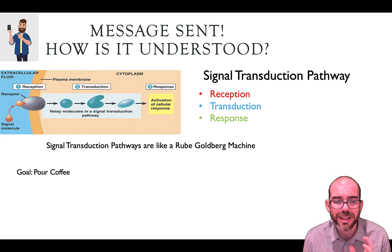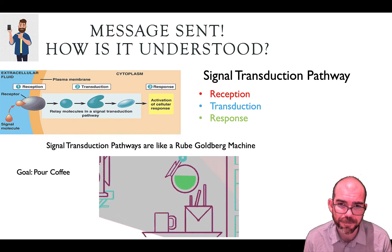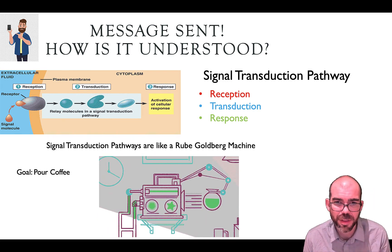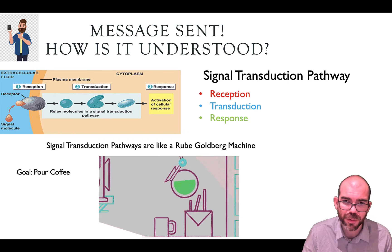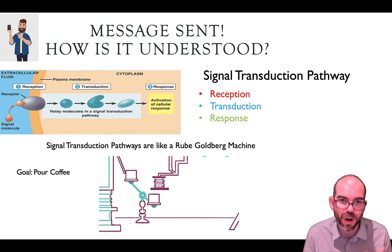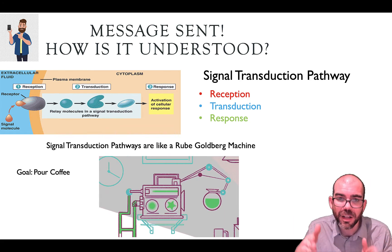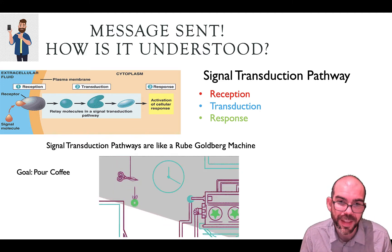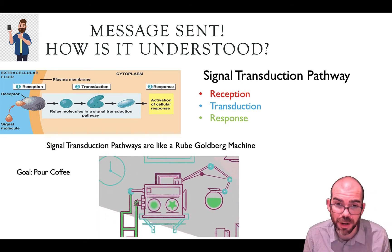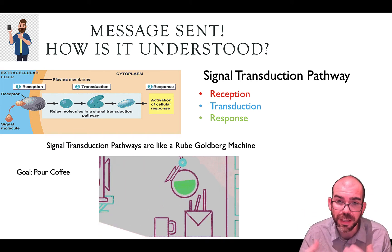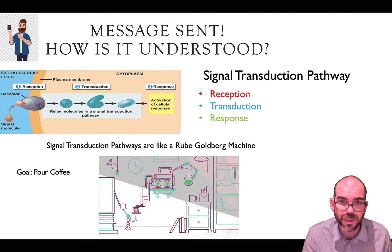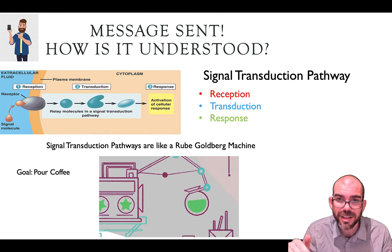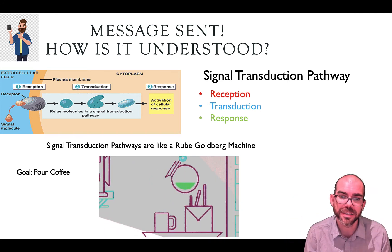The goal of a Rube Goldberg machine is to just pour a cup of coffee. One thing hits another, hits another, triggers another, which then pours the coffee. Our initial message is being carried through in different formats to ultimately trigger our end goal. This is how cells function — you're going to see a lot of movement and reactions, but keep in mind there are always just three parts: molecule received, it goes through different processes, and triggers the end response.